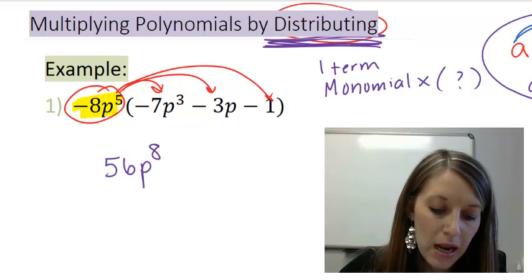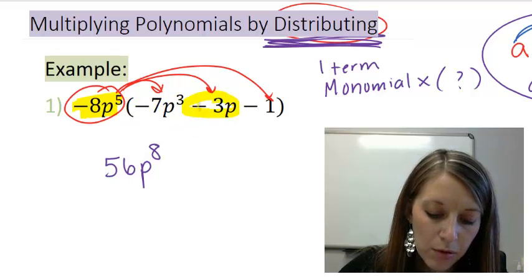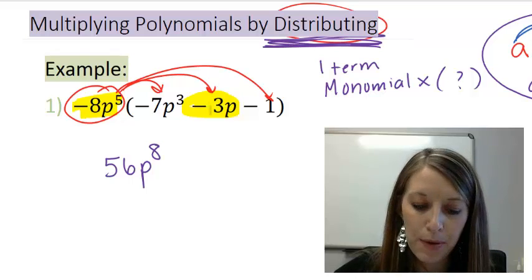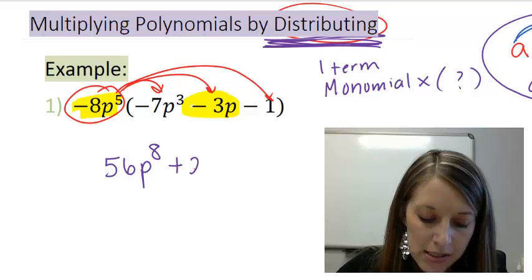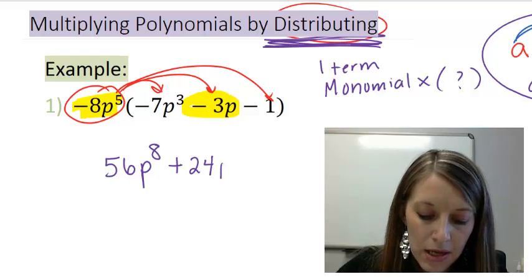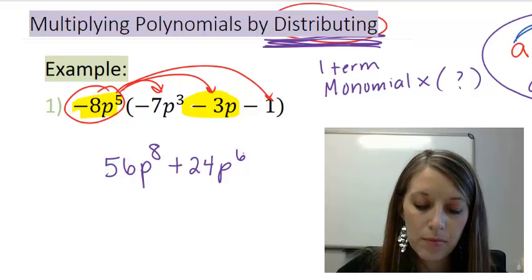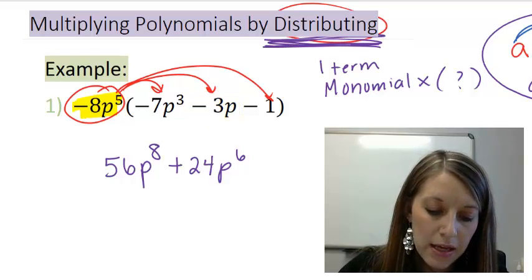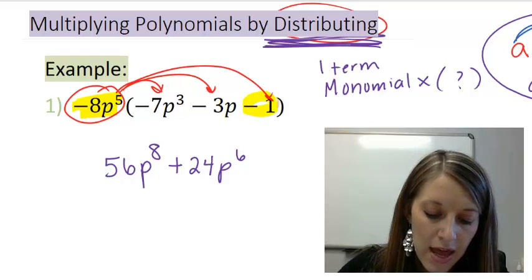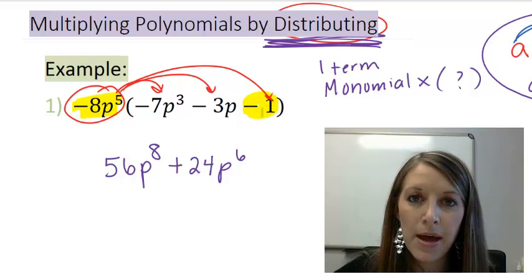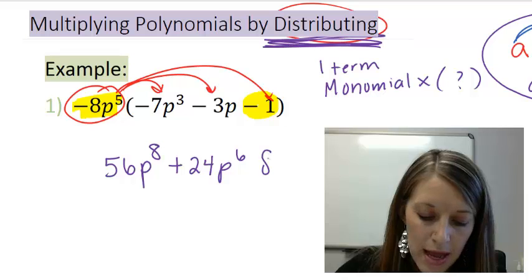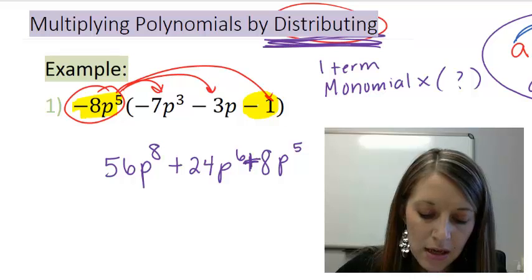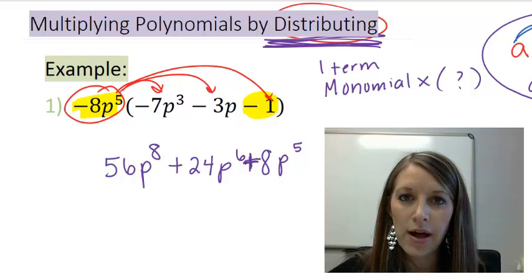Then I take my negative 8p to the fifth and I multiply it by negative 3p. Negative 8 times negative 3 gives me positive 24. p to the fifth times p gives me p to the sixth. Last but not least, I need to take that negative 8p to the fifth and multiply it by negative 1. Negative 8 times negative 1 gives me 8, and my p to the fifth just carries over, and these are both positive because my negatives cancel out.